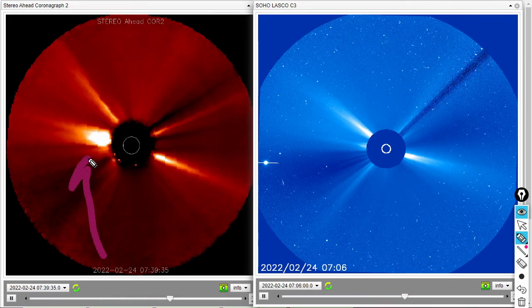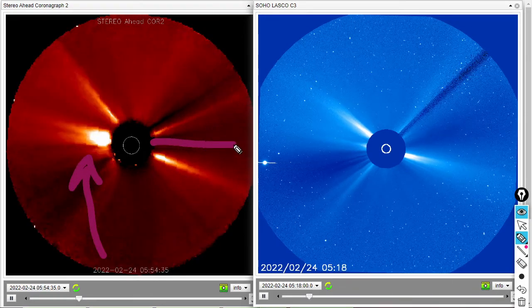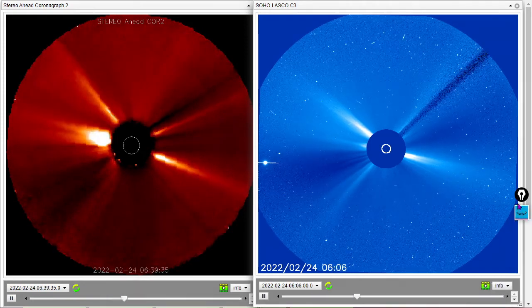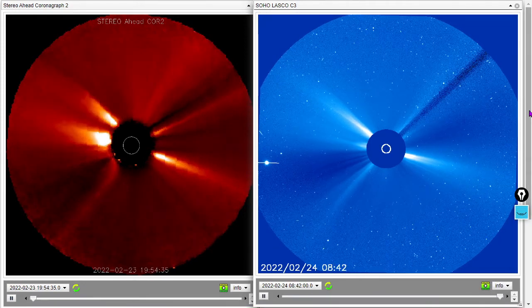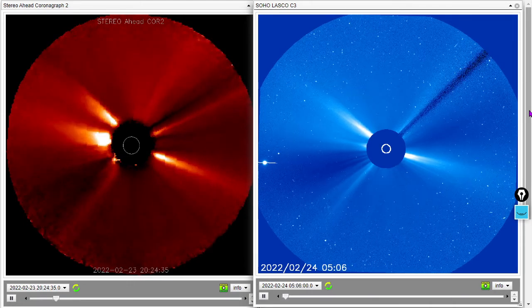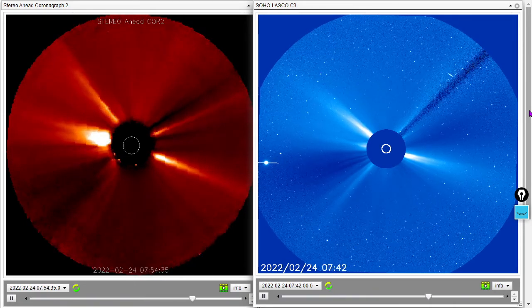Massive prominence here on the opposite side of the sun. Don't worry folks, the Earth would be off in this direction. So the far side of the sun there seeing a major prominence. It could eject. I would expect it to eject at some point today, although those prominences can hang out for days.